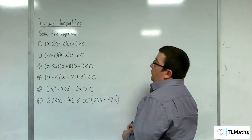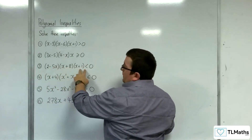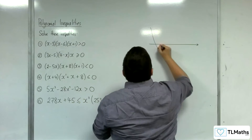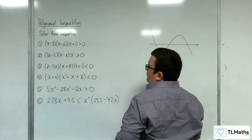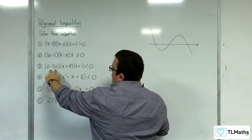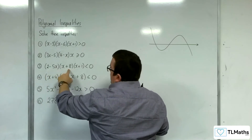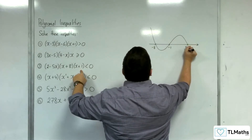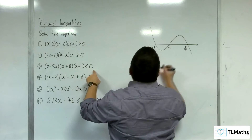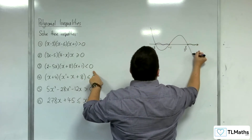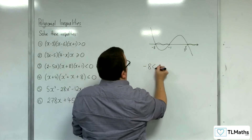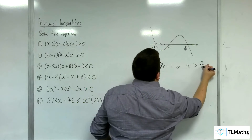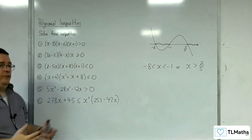Number 3: we've got (2 minus 5x)(x plus 8)(x plus 1). The first thing to notice is we're going to have a minus x cubed again, so top left to bottom right. The roots are 2 fifths, minus 8, and minus 1 — so in order: minus 8, minus 1, 2 fifths. Where is the graph below the x-axis? It's below it there and there. So x is greater than minus 8 but less than minus 1, or x is greater than 2 fifths. Two regions, two inequalities.